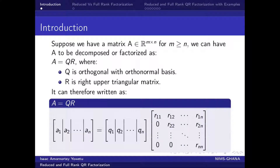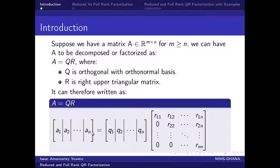Suppose we have a matrix A belonging to our R space of m by n, for m being greater or equal to n. We can therefore decompose our matrix A into Q and R, where our Q is orthogonal with an orthonormal basis and our R is an upper triangular matrix. So considering this matrix A in columns, we can decompose it into Q and R, which is a right upper triangular matrix.